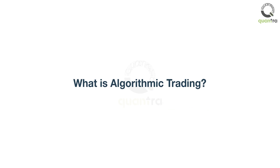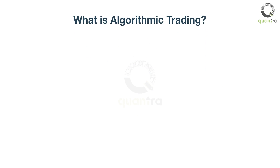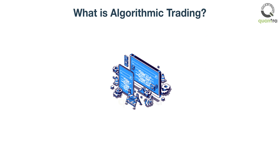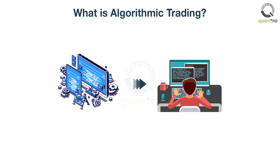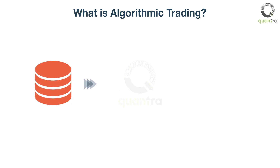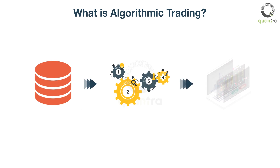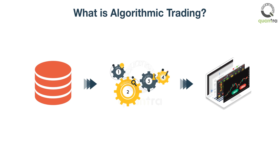What is algorithmic trading? Algorithmic trading is the process of converting a trading logic or strategy into an algorithm or computer code. This strategy takes as input data, processes it, and generates trading signals. An order is placed based on these signals in an automated fashion.